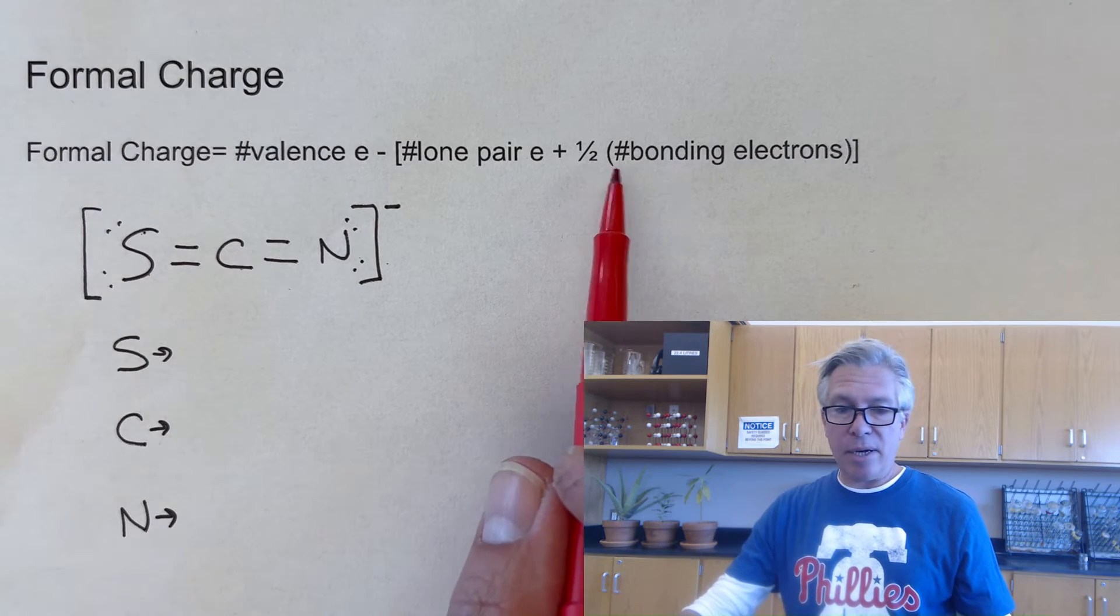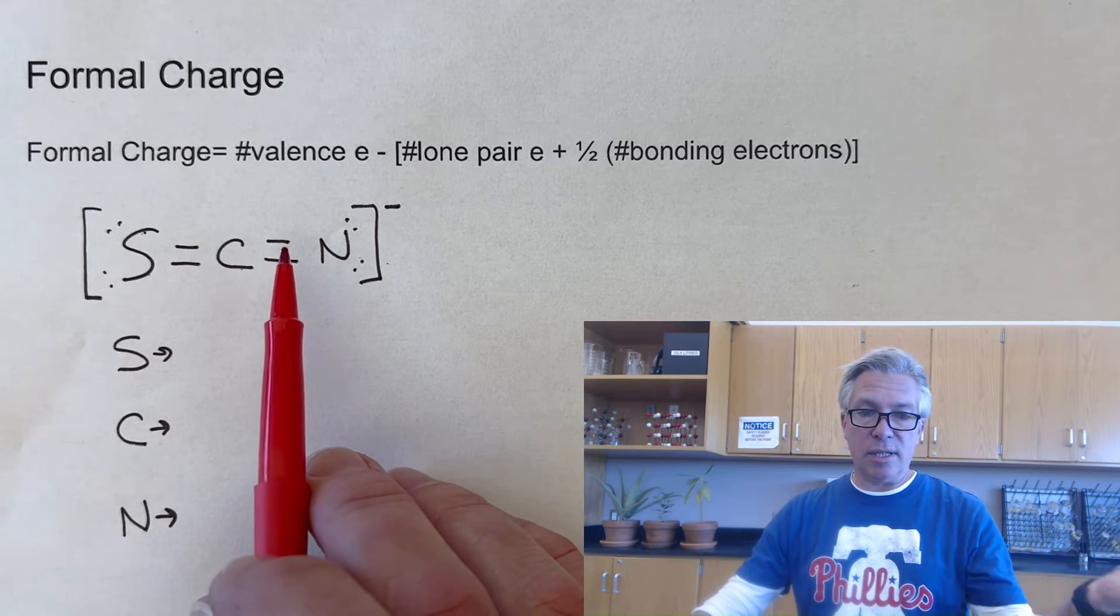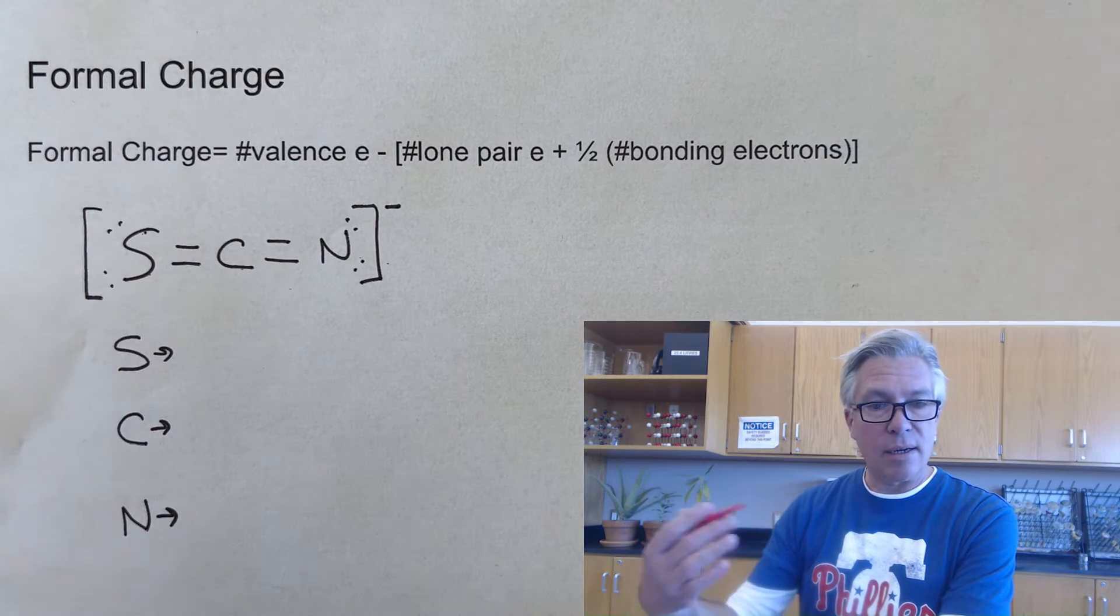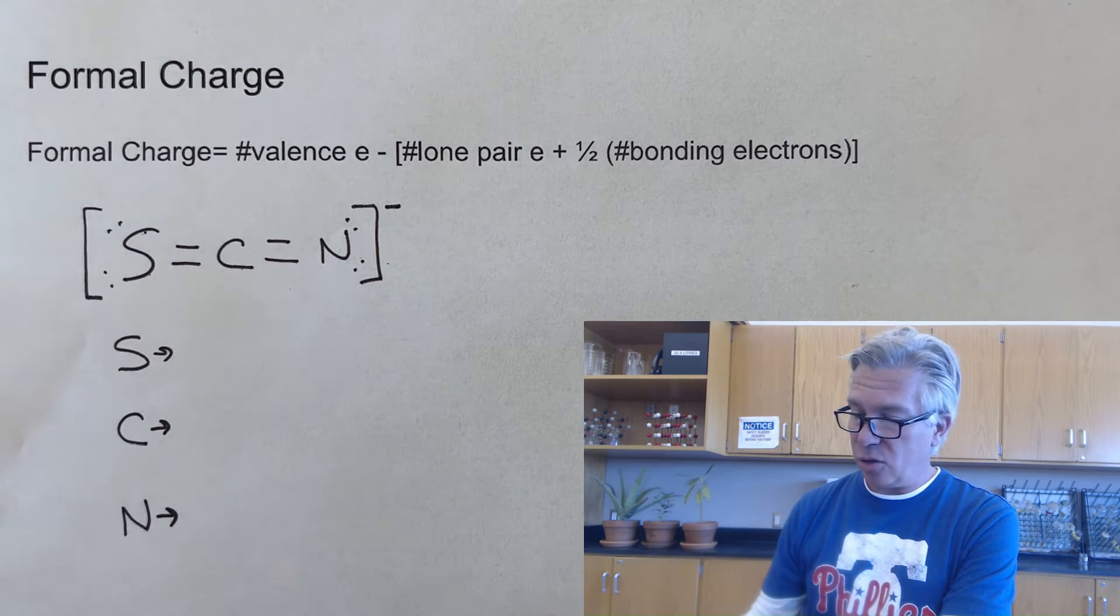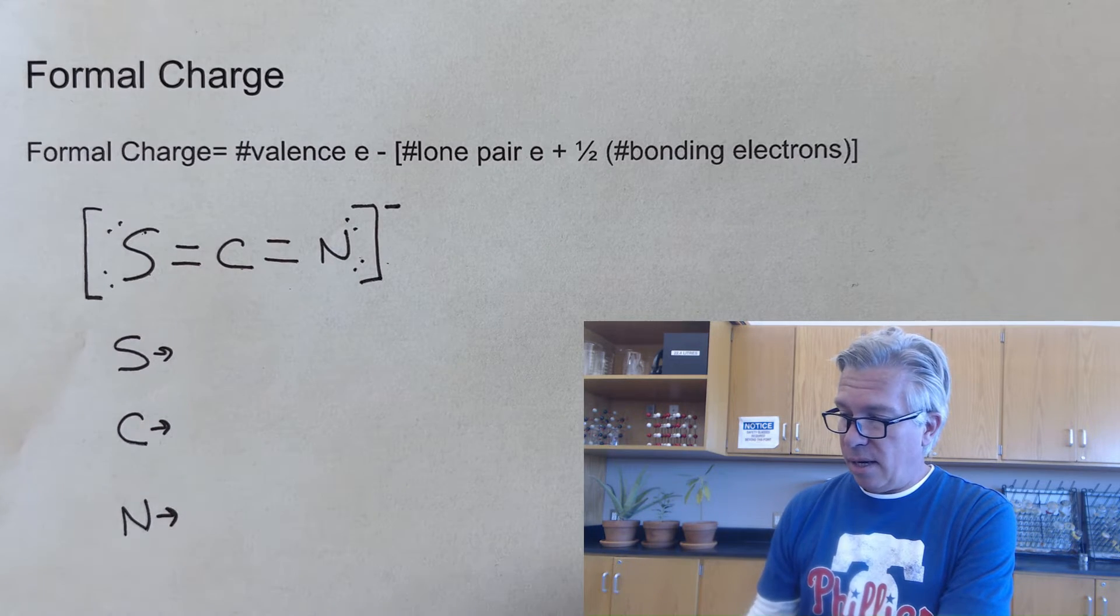We do the half of bonding electrons because these electrons are shared, and so we'll give one to each of the two atoms for each of the bonds that are actually there. So I want to demonstrate it real quick, and I'll let you pause the video and try the other ones from the resonance structures to see how you do.